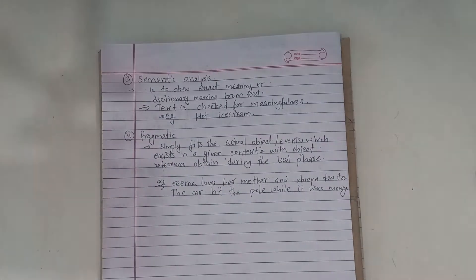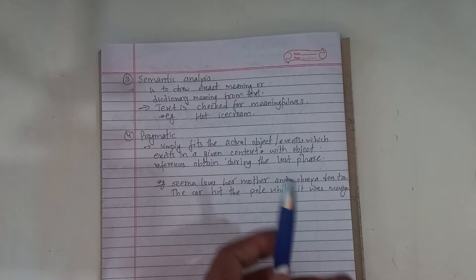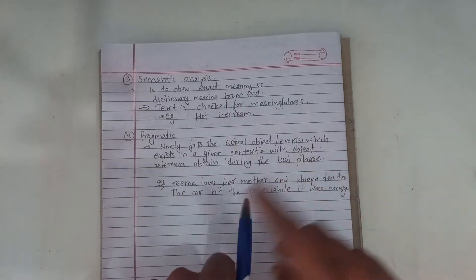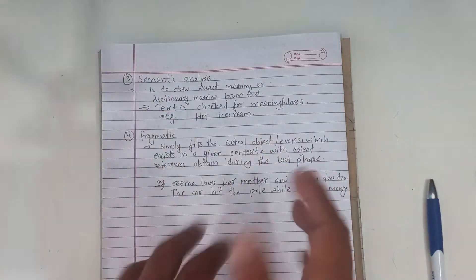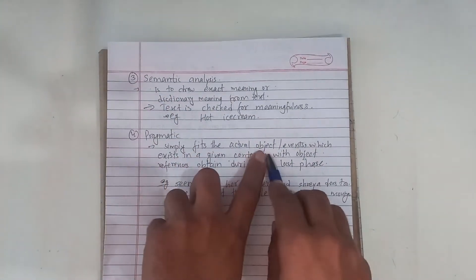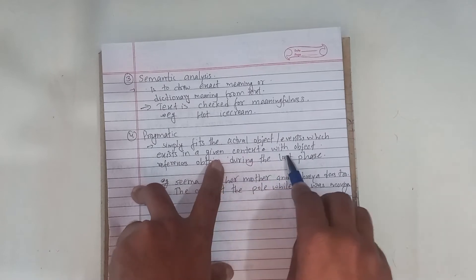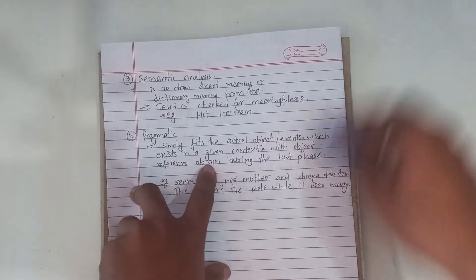Pragmatic analysis is to draw exact objects in the context - to fit the actual objects and events which exist in a given context with object reference, often during the last phase.